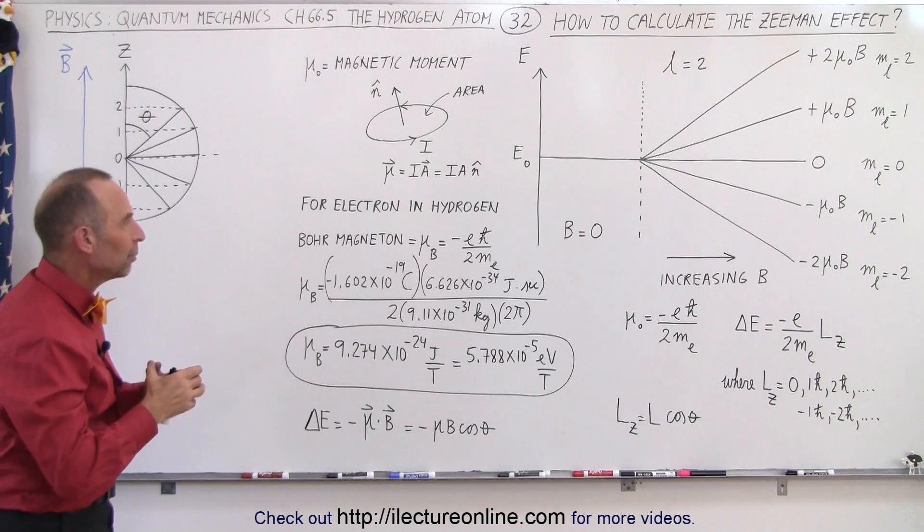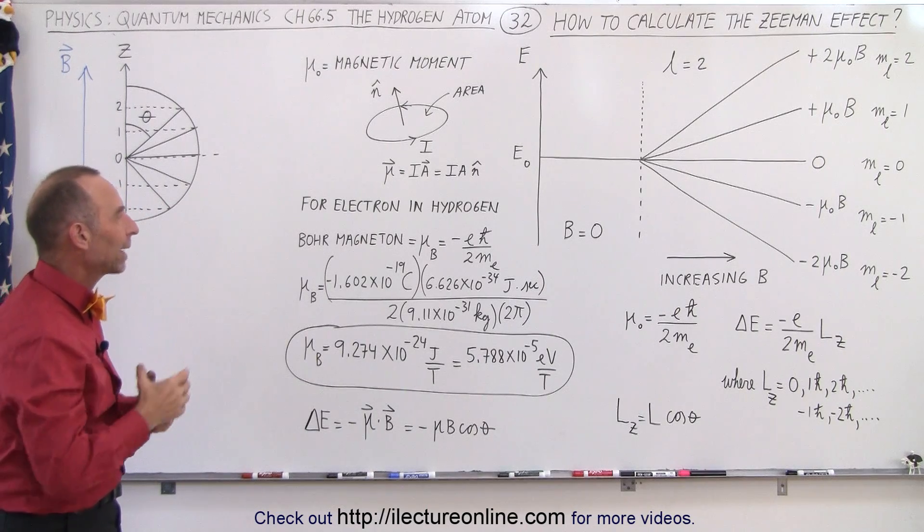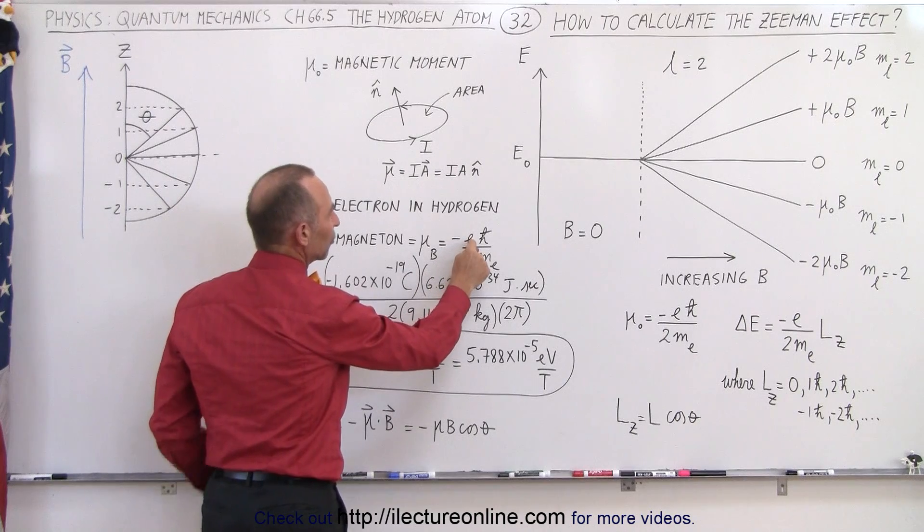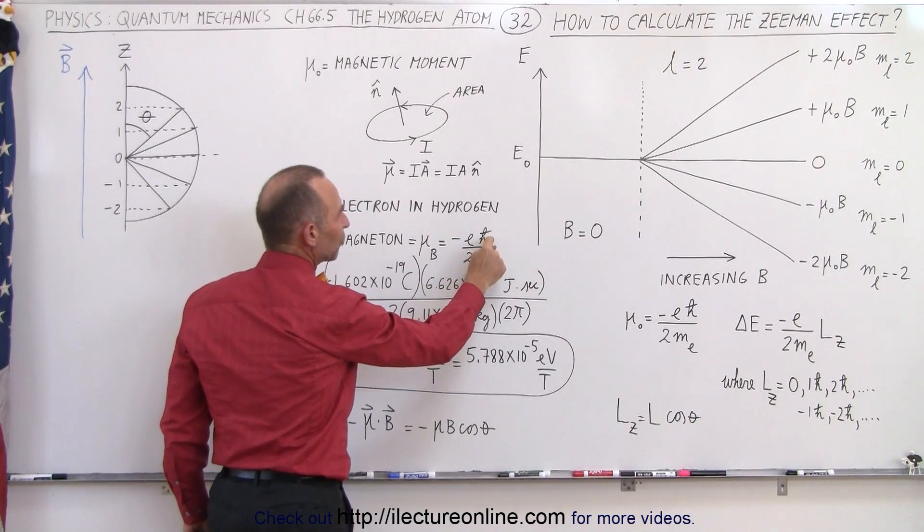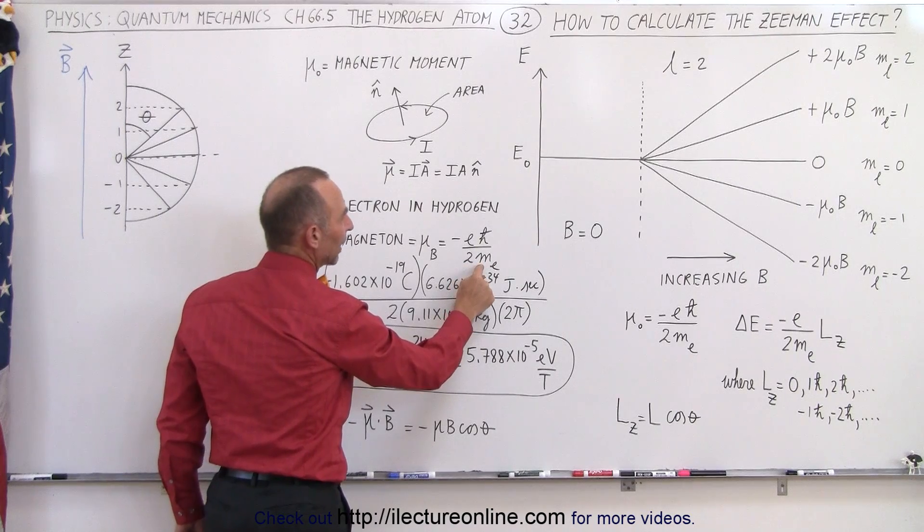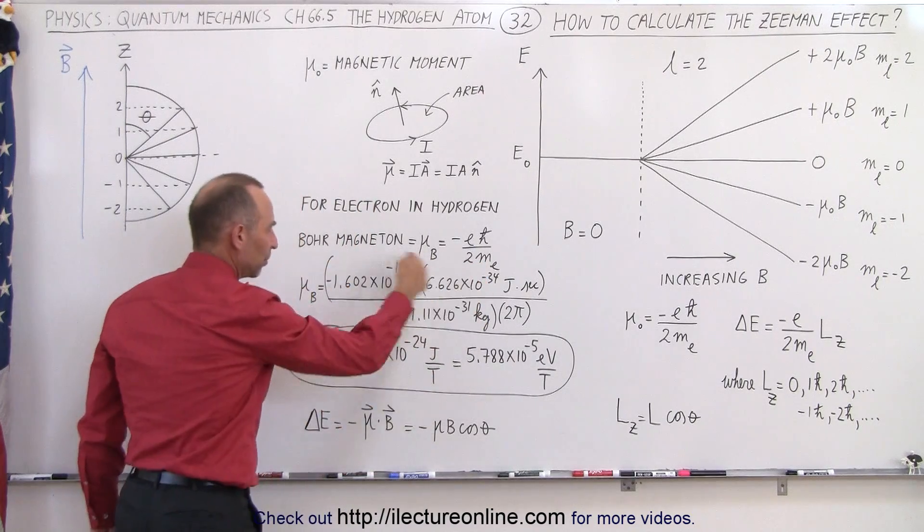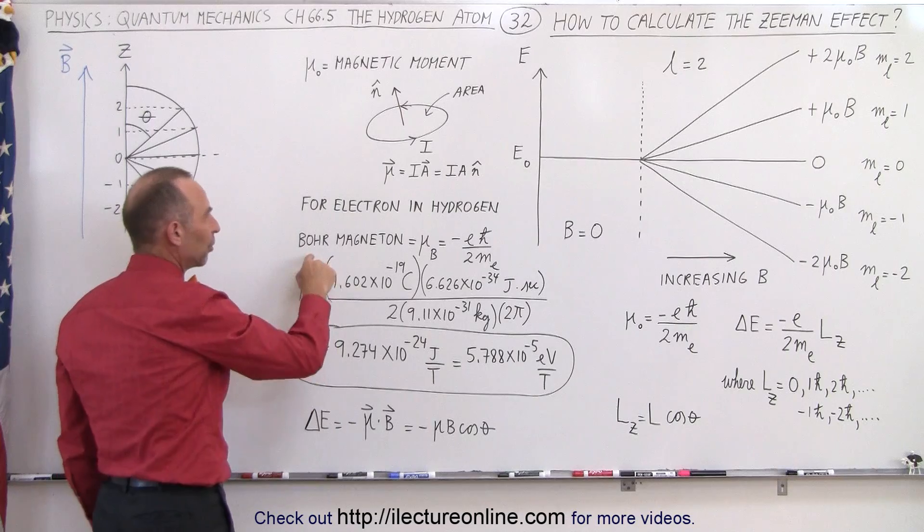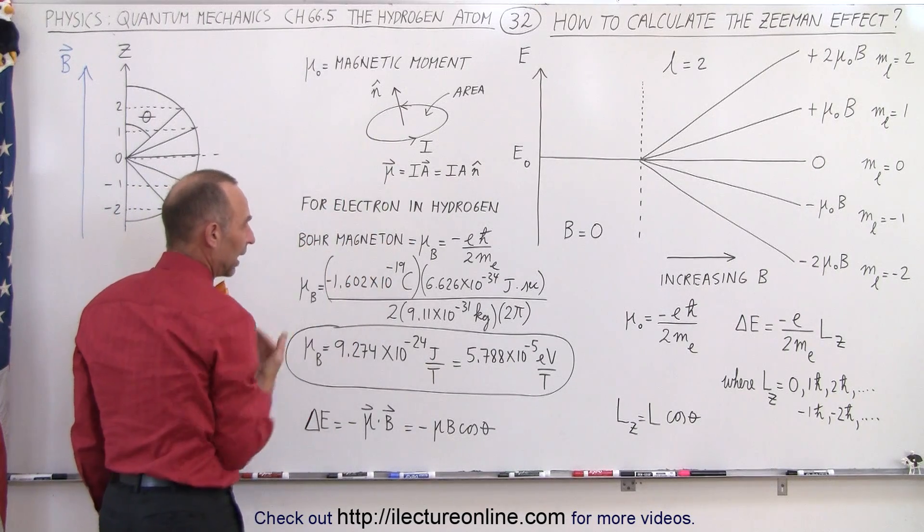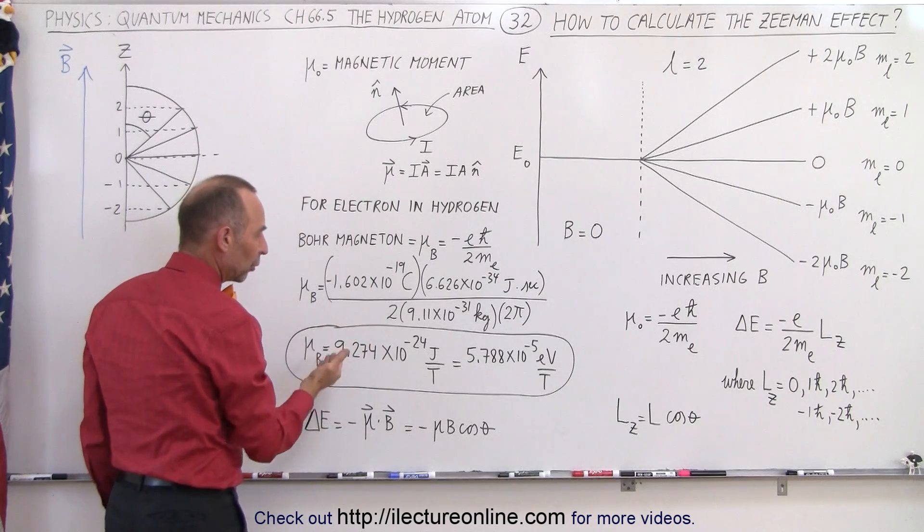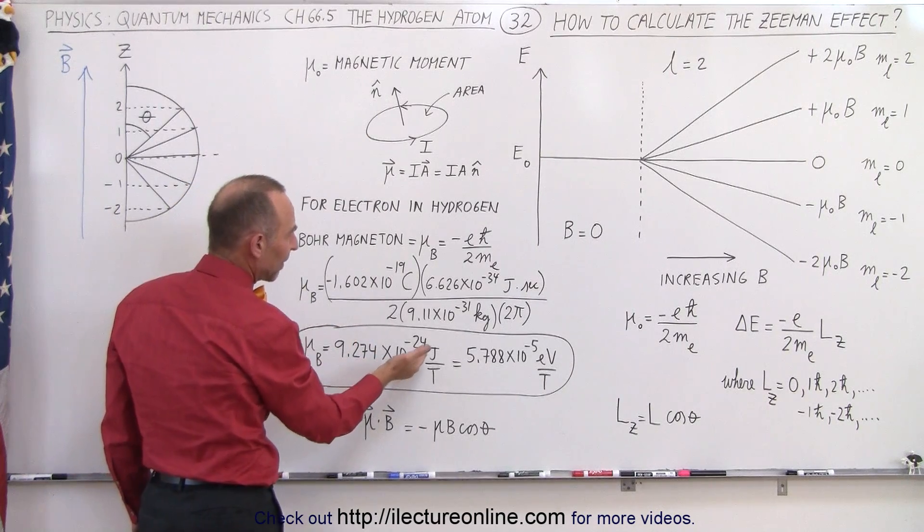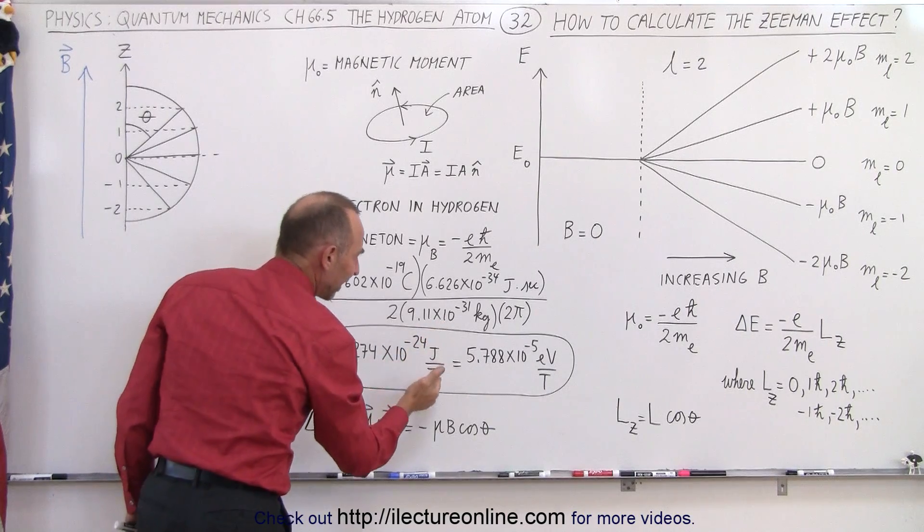For an electron in a hydrogen atom, we call that the Bohr magneton. The Bohr magneton is defined as the negative of the electron charge, H bar (which is H divided by 2 pi), divided by 2, divided by the mass of the electron. If we plug in the numbers, you can see that the Bohr magneton, which is essentially the magnetic moment for an electron in a hydrogen atom in the lowest energy level, is equal to 9.274 times 10 to the minus 24 joules per tesla.